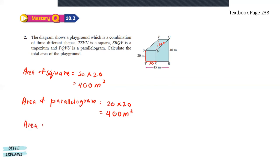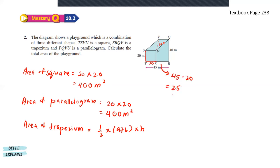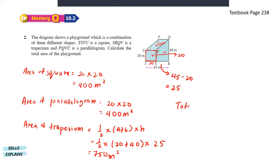Lastly, for the area of the trapezium: 1 over 2 times the sum of parallel lines times the height. The whole length is 45 and this part is 20, so 45 minus 20 gives us 25 for the height. The parallel lines are 20 and 40, so 1 over 2 times (20 plus 40) times 25 gives us 750 meters square. The total area of the playground is 400 plus 400 plus 750, which is 1550 meters square.